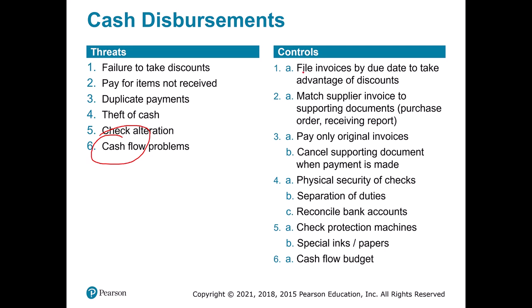Controls for cash disbursement include filing things by due date, doing thorough matching, and canceling documents once payment has been made — either with a physical stamp or a system flag. We split up separation of duties so the person who writes checks does not also reconcile the bank account. Checks might have special protection like security paper, or we do this all digitally through electronic checks and payments. We also maintain a way of tracking cash flow for the organization.